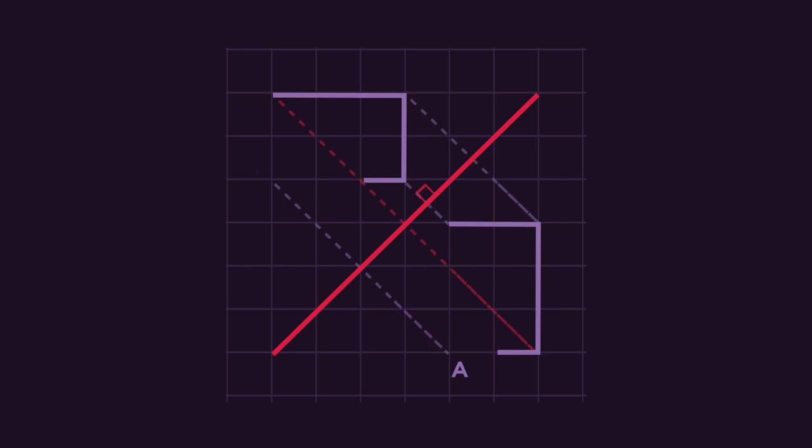But now we have a diagonal mirror line. See how the distances now also have to be diagonal, so that we cross the mirror line at right angles.